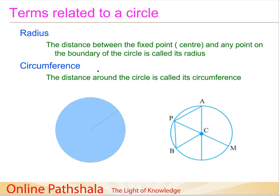Now let us understand a few terms related to a circle. The first is the radius. The fixed point is called the center of the circle. The distance between this fixed point — the center — and any point on the boundary of the circle is called its radius. So the distance from the center to any point on the circle is the radius of the circle.